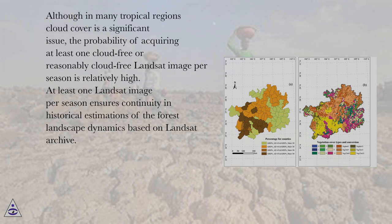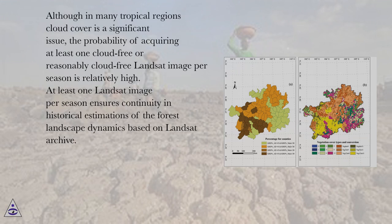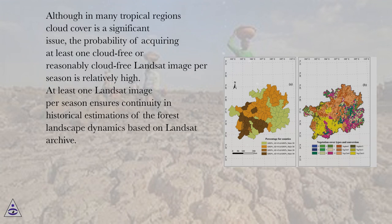Although in many tropical regions cloud cover is a significant issue, the probability of acquiring at least one cloud-free or reasonably cloud-free Landsat image per season is relatively high. At least one Landsat image per season ensures continuity in historical estimations of the forest landscape dynamics based on the Landsat Archive.